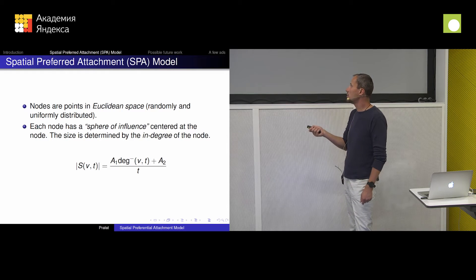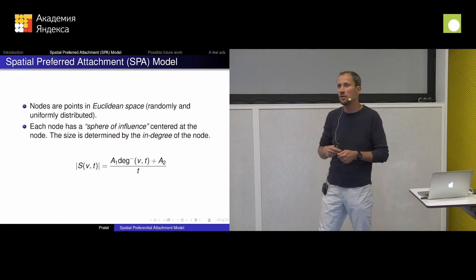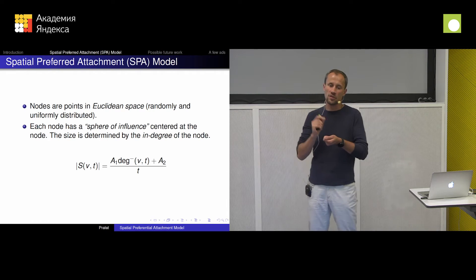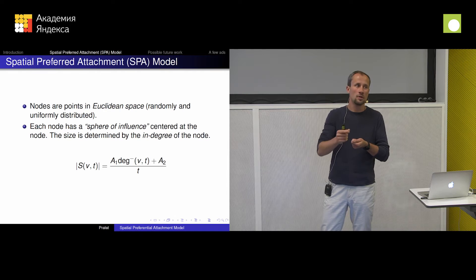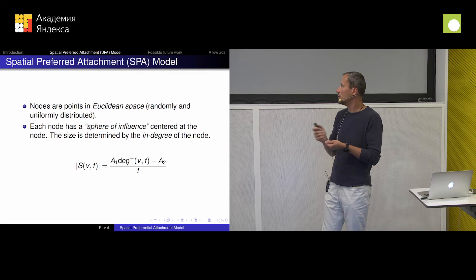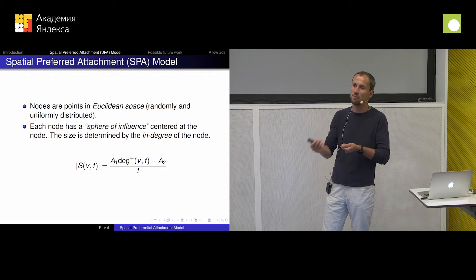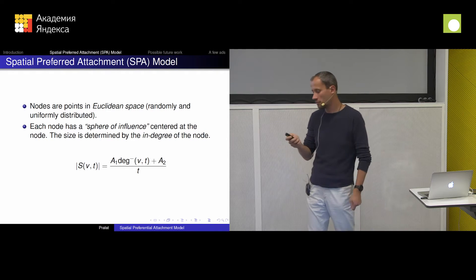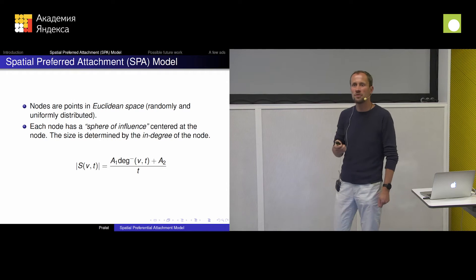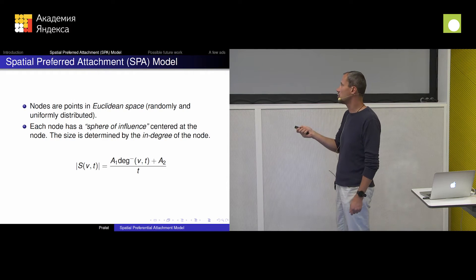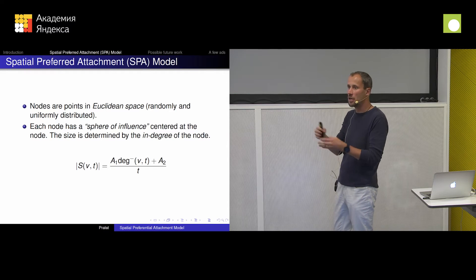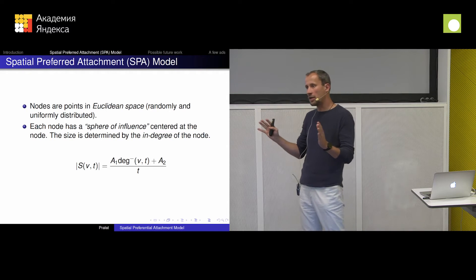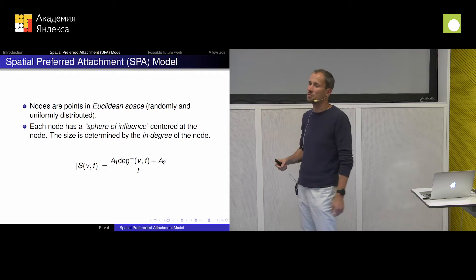Worth pointing out is that for now I'm thinking about a directed graph — there will always be someone generating a link to someone else. This means it's in-degree: the number of people that point to me. And in general, your spheres of influence will be shrinking over time, but of course if you gain more neighbors, maybe it will grow.